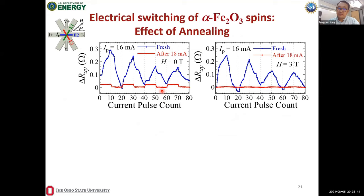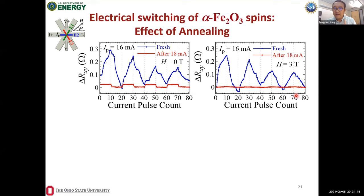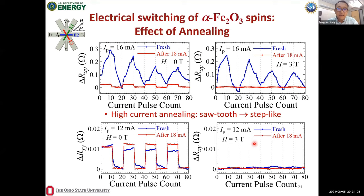A student accidentally discovered that after applying a high pulse current of 18 mA — a 'kneeling' or current-annealing step — the behavior of the sample changes dramatically. Before kneeling, 16 mA shows sawtooth behavior; after 18 mA kneeling, 16 mA produces clean step-like switching. Applying 3 T field after kneeling makes the signal flat, confirming the step-like feature is magnetic. Comparing fresh and kneeled samples at 12 mA shows that the kneeled sample gives a cleaner, more well-defined square-like switching without sawtooth artifacts.